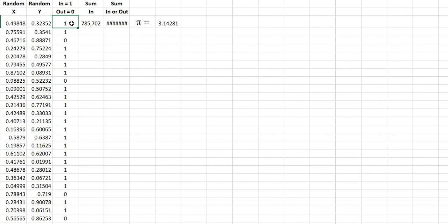If it's in, I call it 1. And if it's out, I call it 0. And then I sum this column from 6 to a million and 5, a million times.